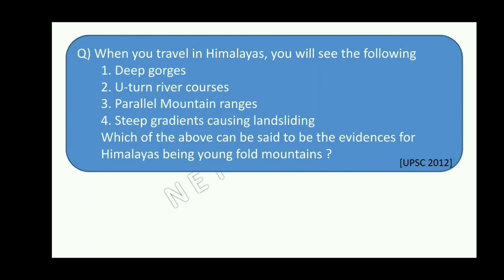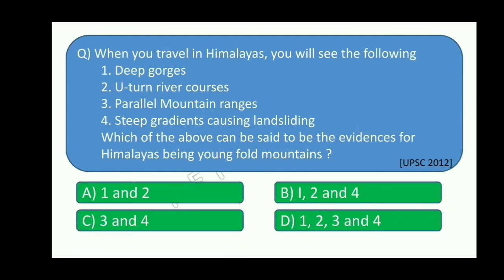Himalaya is a young fold mountain — Praman upar koi pungtai. Deep gorges form because it is a young mountain. Antecedent river courses show it is a young mountain. Parallel mountain ranges with steep gradients also confirm this. So all four features — deep gorges, antecedent river courses, parallel ranges, and steep gradient — are evidence that the Himalaya is a young fold mountain.